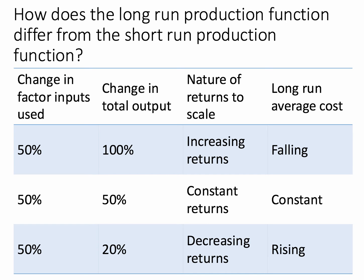Here's a quick numerical example. We might change all the factor inputs used by 50% in each case — change the amount of land, labour and capital by 50%. The output resulting from that describes the returns to scale. So if a 50% increase in factor inputs causes total output to rise by 100%, we have increasing returns to scale and the long run average cost will be falling.